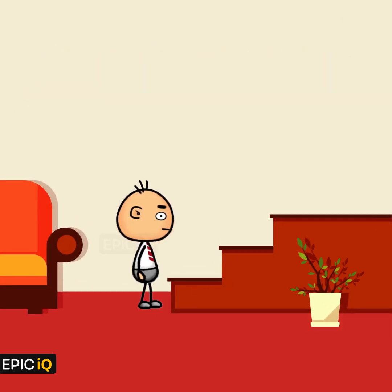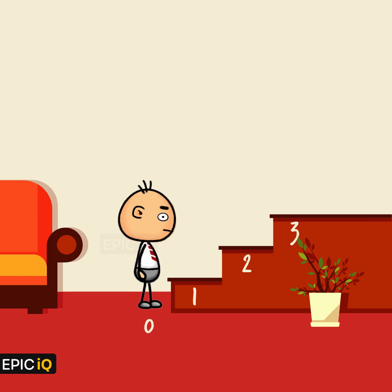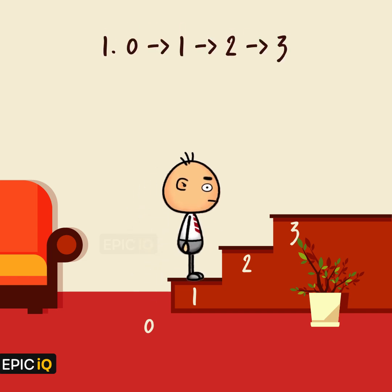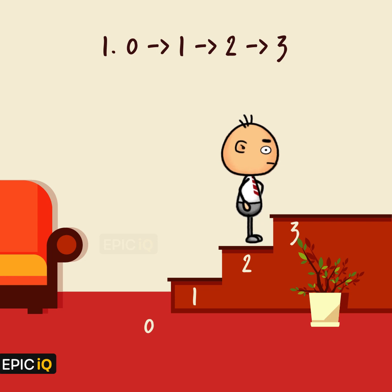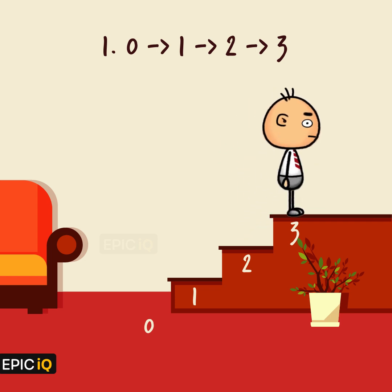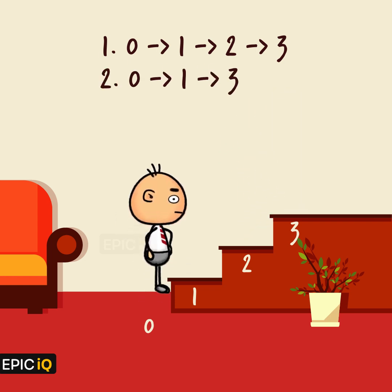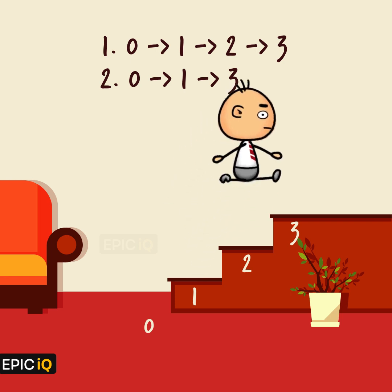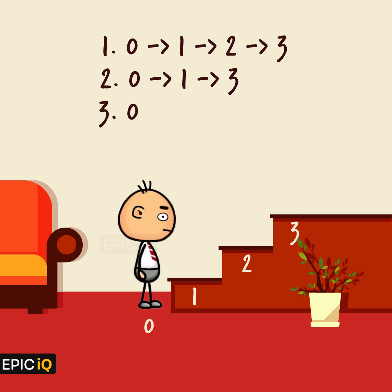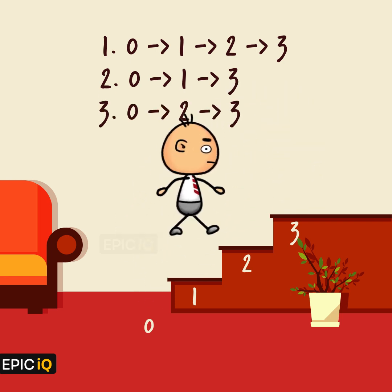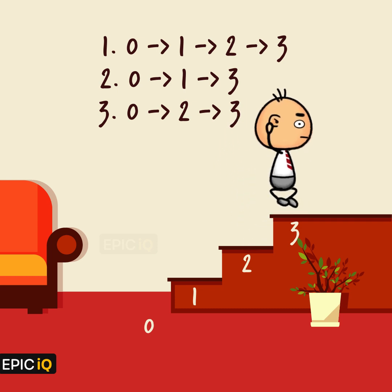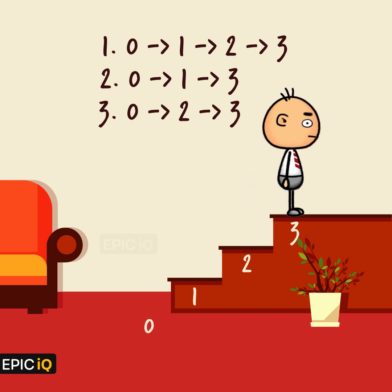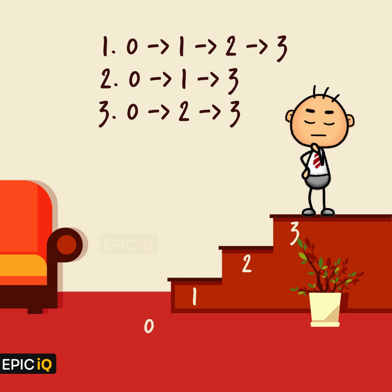Let us think of the ways little Ted can move from the floor to the third step. One possibility is floor to the first step, then second, and then third. Second possibility is floor to the first step and then the third. Third possibility is floor to the second step and then the third. So there are three possible ways of going from the floor to the third step.